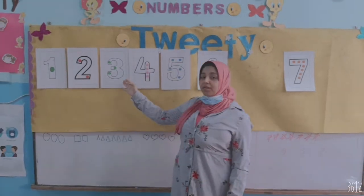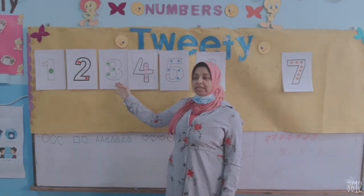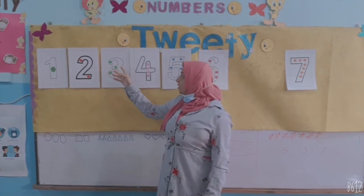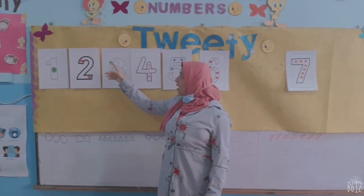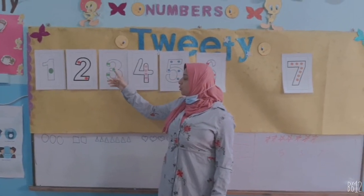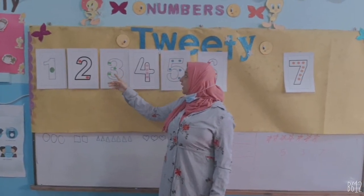What is number? 3. How many circles are there? 1, 2, 3.